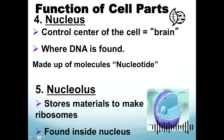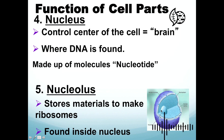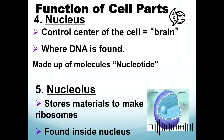The nucleolus stores materials to make ribosomes and is found inside the nucleus. It is a rounded mass within the nucleus that contains RNA and proteins. The nucleolus produces ribosomes, and those ribosomes eventually transport proteins and other materials.